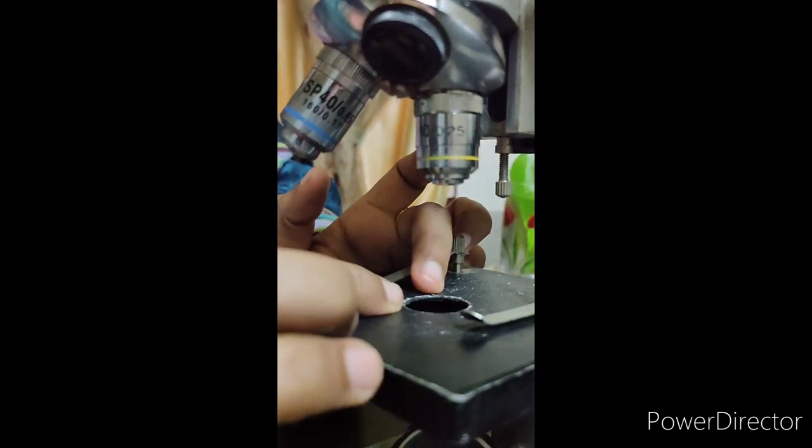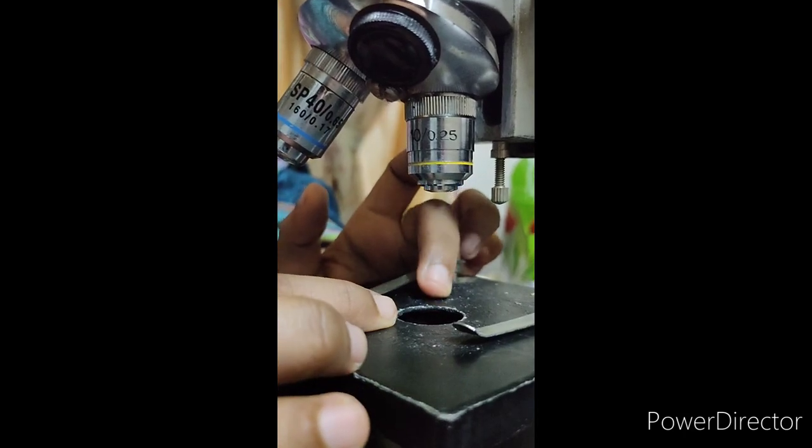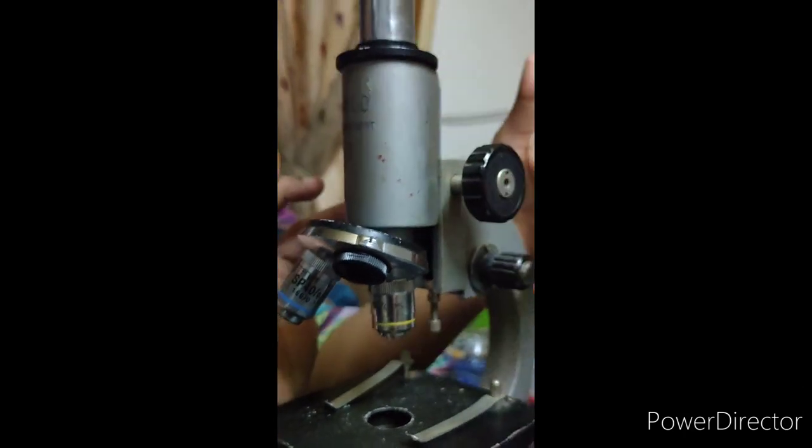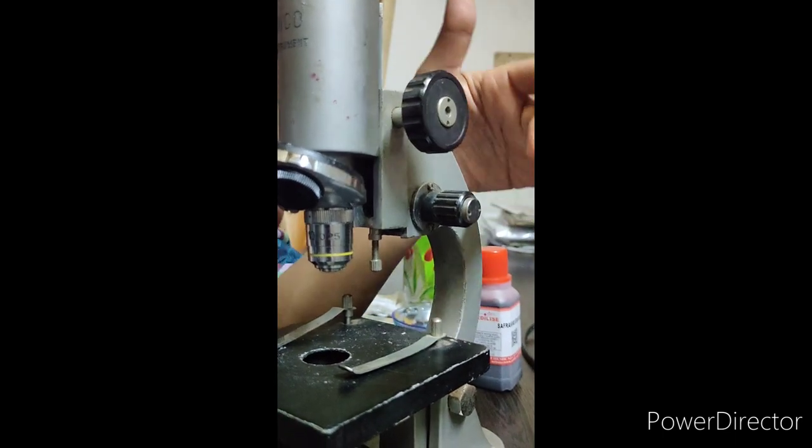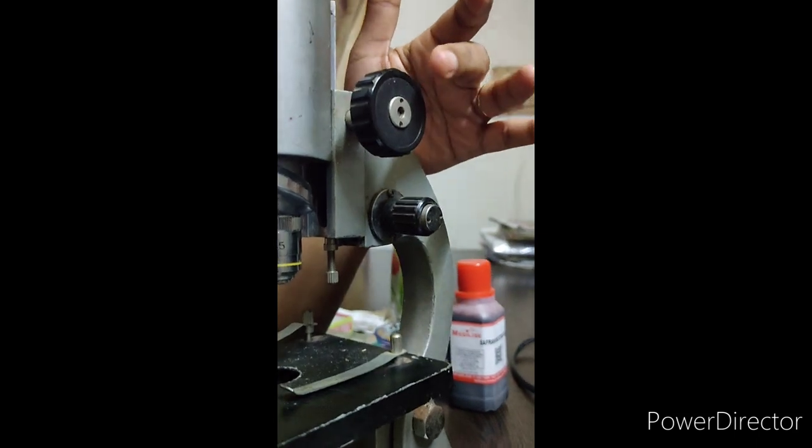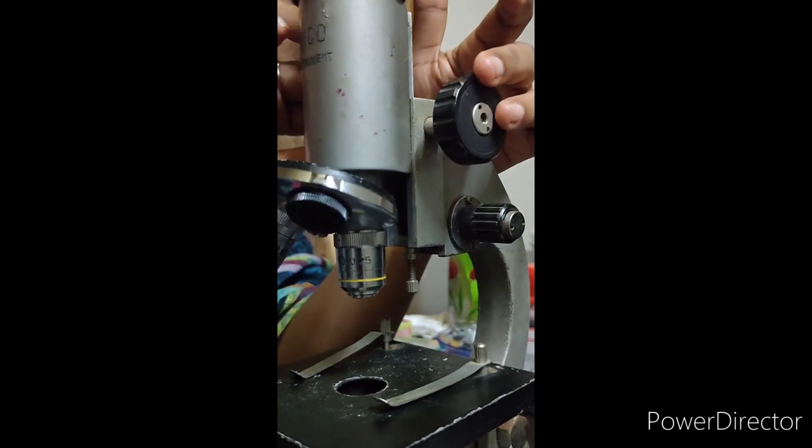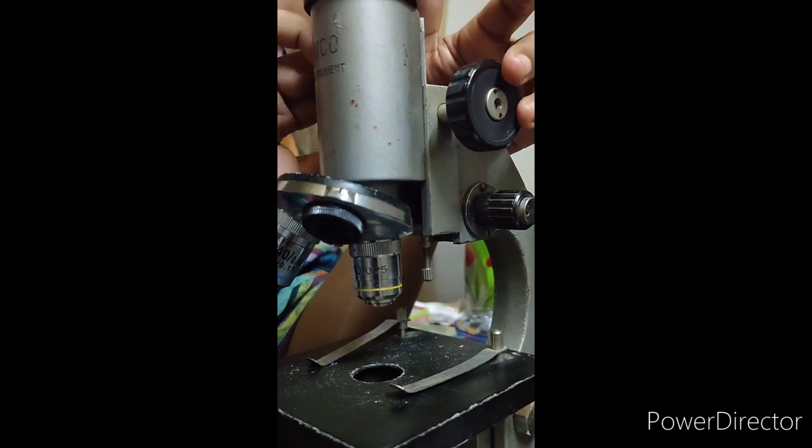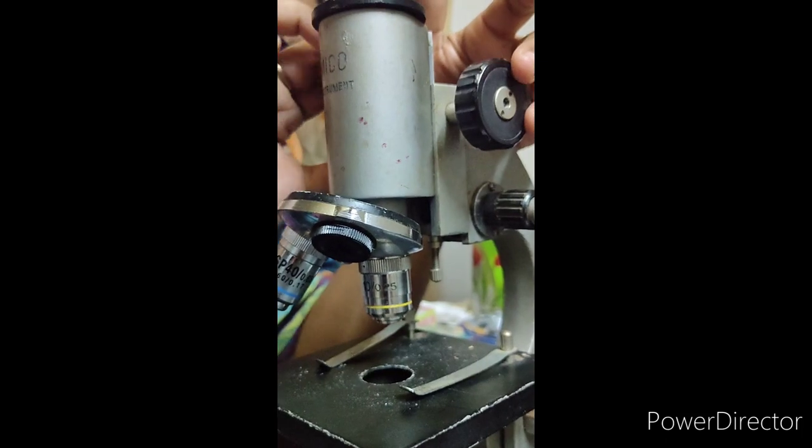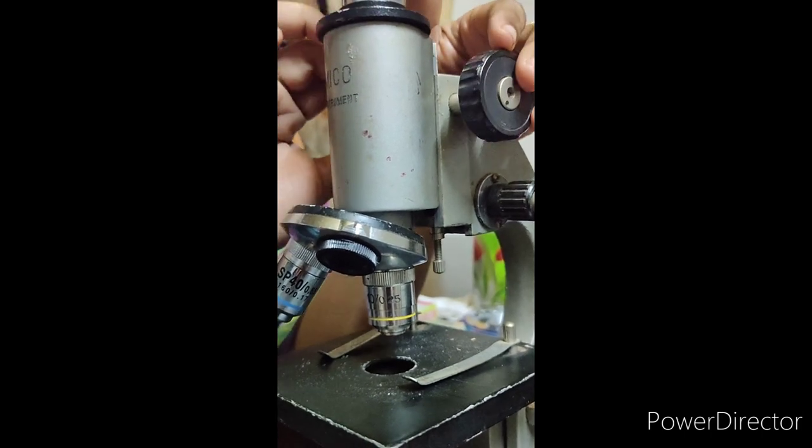Now, to cover up the distance here between the objective lens and the specimen, we have the help of two knobs. A bigger knob and a smaller knob. The big one is known as the coarse adjustment knob. With this knob, just observe it carefully, I am moving the objective lens very near to the specimen.